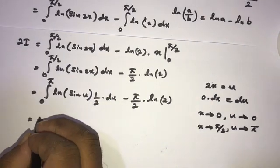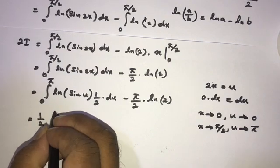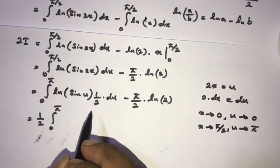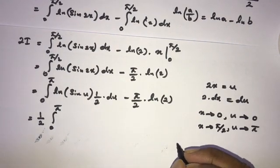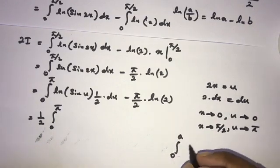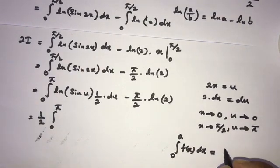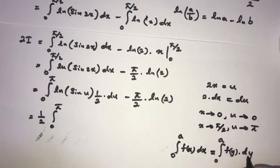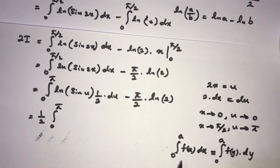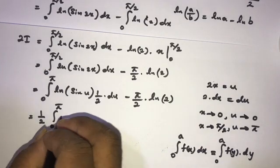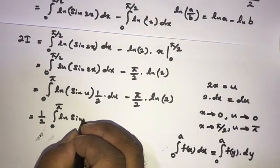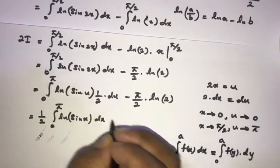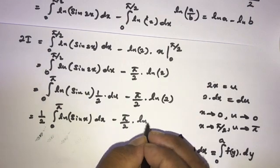Since 1/2 is a constant, we have 1/2 times the integral from 0 to π of ln(sin u) du, minus π/2 times ln 2. Since definite integrals are independent of variable, we can replace u with x, giving 1/2 times the integral from 0 to π of natural log of sin(x) dx, minus π/2 times ln 2.